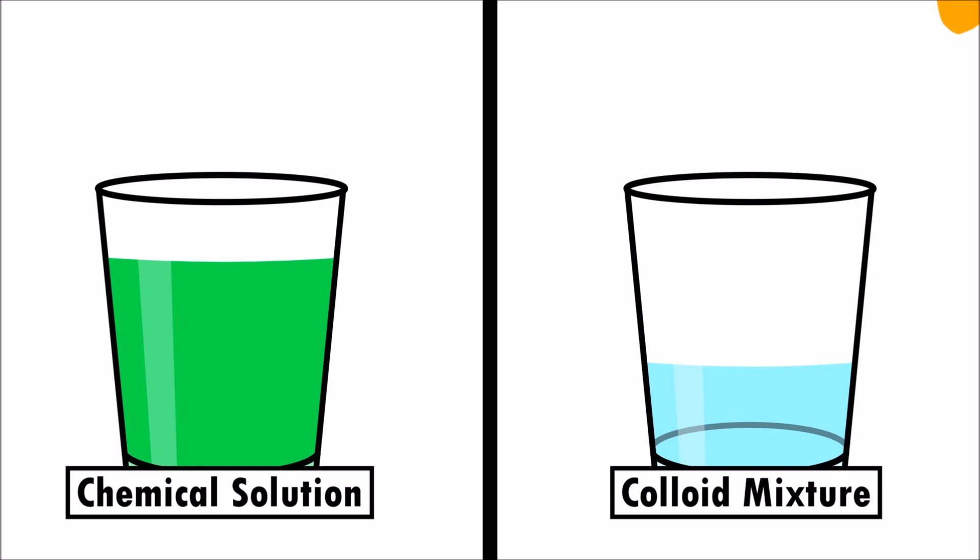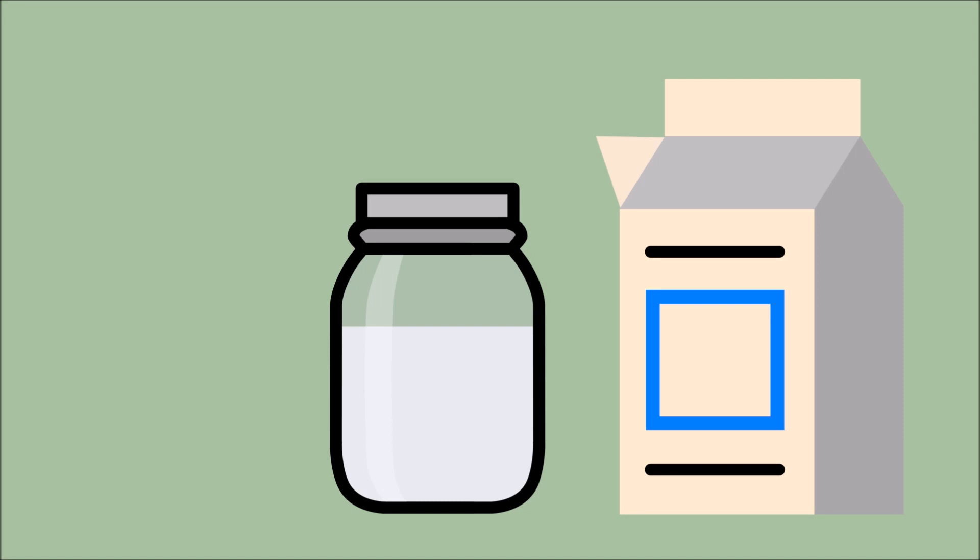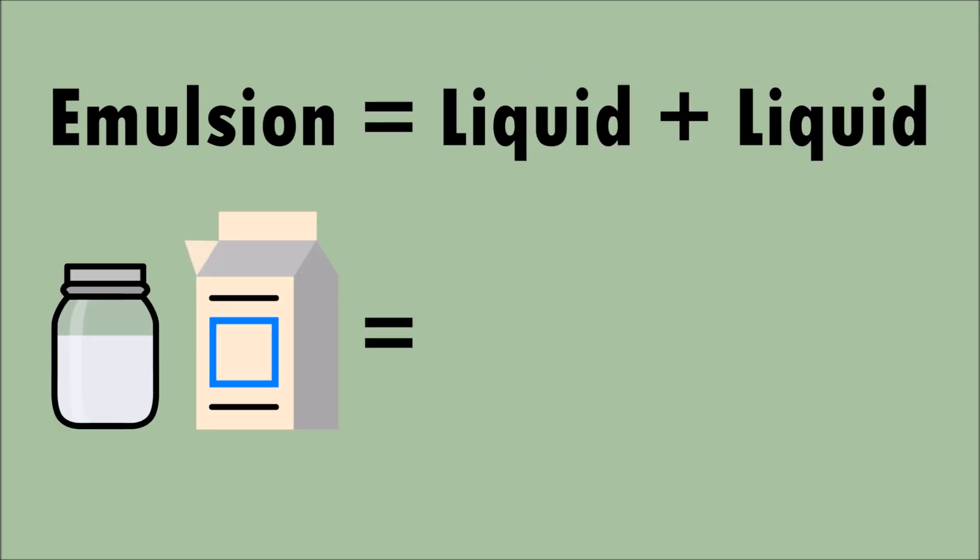But in a colloid, particles of one substance are dispersed in another substance and are incapable of being dissolved! Cream is a type of colloid called emulsion! Emulsion is a mixture of two or more liquids and cream has fat droplets dispersed in water!